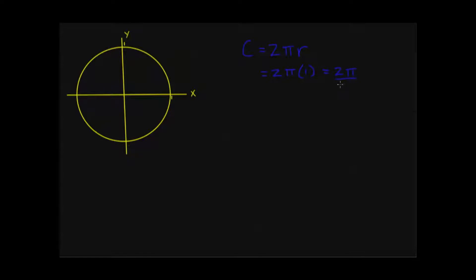A circumference of 2π means that if I were to start right here at x equals 1, y equals 0, and travel all the way around the circle without backtracking, smoothly traveling around, and then stopped right where I started, I would have traveled a total distance of 2π units. So if this circle had a radius of 1 inch, I would have traveled 2π inches.